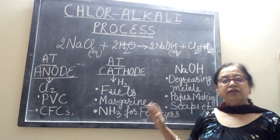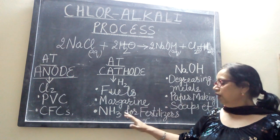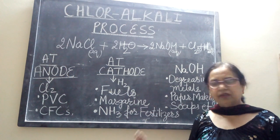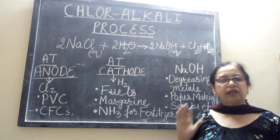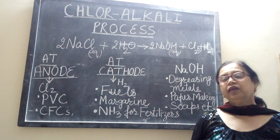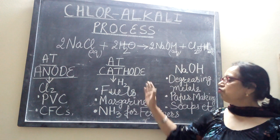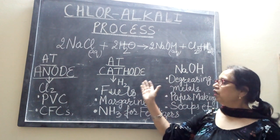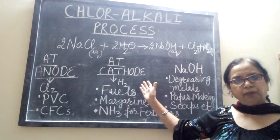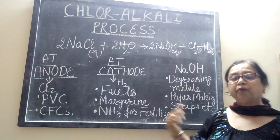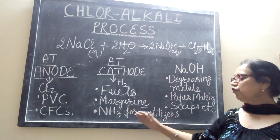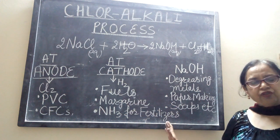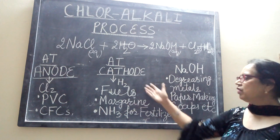Next comes ammonia. Ammonia is a basic material for the preparation of fertilizers, and it is prepared in industry by Haber's process. For Haber's process, we require hydrogen as a raw material. So the hydrogen we get from the chloralkali process is further used in Haber's process for the manufacturing of ammonia, which is then used in manufacturing fertilizers.